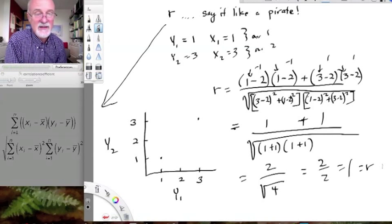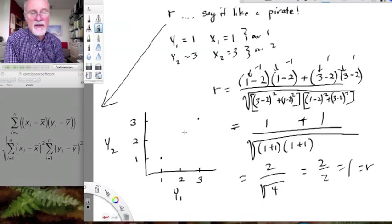Because we have a perfect correlation and it's a positive correlation. The bigger y1, the bigger y2, and the smaller y1, the smaller y2. In fact, they're the same numbers, okay. So it's a perfect correlation.